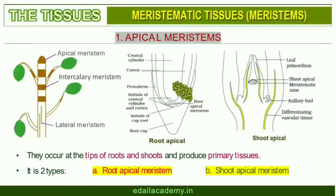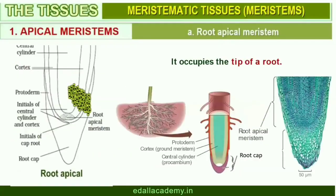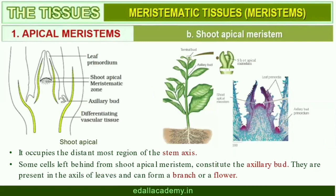Root apical meristem occupies the tip of a root while the shoot apical meristem occupies the distalmost region of the stem axis. During the formation of leaves and elongation of stem, some cells left behind from the shoot apical meristem constitute the axillary bud. Such buds are present in the axils of leaves and are capable of forming a branch or a flower.